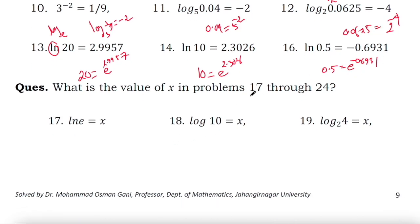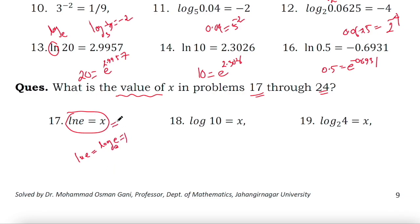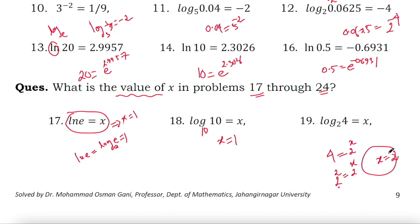For questions 17 to 24 you need to find the value of x. We know ln e equals log e to the base e which equals 1, therefore x equals 1. And log 10 base 10 equals 1, since when there is no base you consider base 10 — this is common logarithm, so x equals 1. And for log 4 base 2 equals x, we write 4 equals 2 to the power x, so 2 squared equals 2 to the power x, therefore x equals 2.